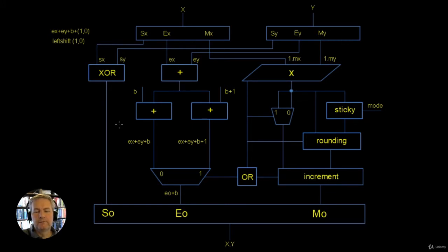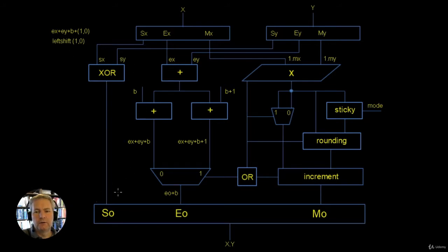An overview of the circuit: we have three different sections. We're interested in operating on the sign bit, which is done here. We're interested in operating on the exponent, so the addition of the exponent is done here. And we're also interested in the multiplication of the mantissa and the rounding, and that's done in this section here. Let's talk through each of these sections individually.